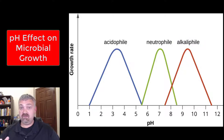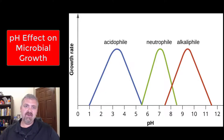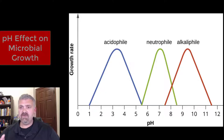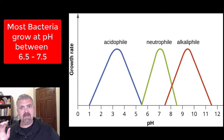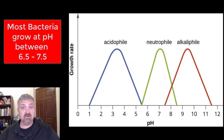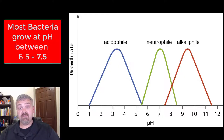There is a tremendous diversity with microorganisms — there are organisms that grow basically anywhere. But we only care about the ones that like to grow in us and on our food. Most bacteria are going to grow at a pH between 6.5 and 7.5. That's the world around us; our bodies are like that. So most bacteria like to grow between a pH of 6.5 and 7.5, hovering right around neutral.